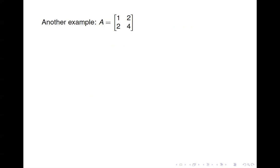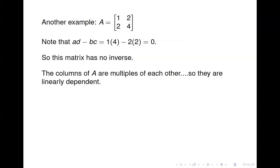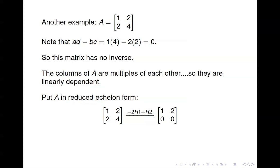Let's look at another example — another 2 by 2 matrix. In this case, if we do AD minus BC, we get 1 times 4 minus 2 times 2, which gives us 0. So this matrix does not have an inverse. If you look at that matrix, the second column is just 2 times the first — those columns are linearly dependent. In reduced echelon form, it has a row of all zeros, so we have a free variable. A is not row equivalent to the identity matrix, and it turns out that if A is not row equivalent to the identity matrix, it will not be invertible, and if it is, it will be invertible.